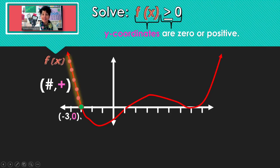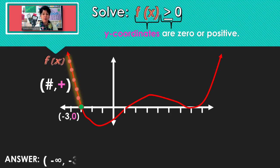So this time we're not going to leave out negative 3, because we're looking for y-coordinates that are 0 or positive. So far our solution is negative infinity up through negative 3, and we're going to use a bracket to include negative 3, because it generates a y-coordinate of 0.